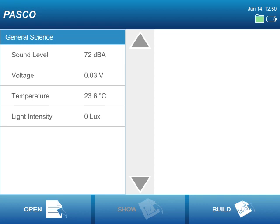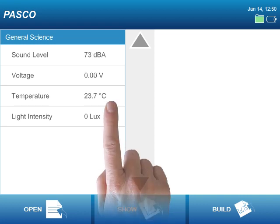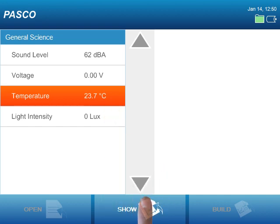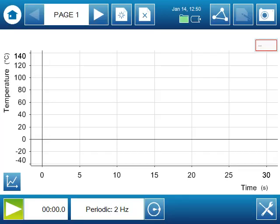Now, if we're interested in recording data or exploring one of these measurements in more detail, we can select a measurement by touching it and choose Show at the bottom of the home screen. This instantly creates a four-page Spark Lab. Each page of the Spark Lab has a different display for the measurement we selected, beginning on page one with a graph of temperature versus time.